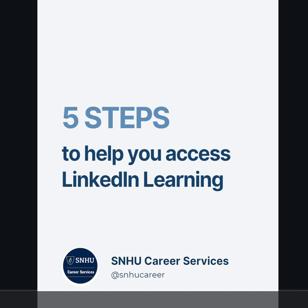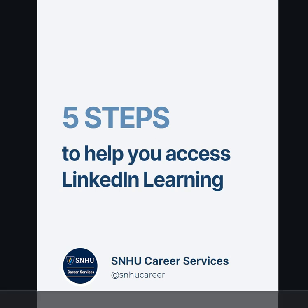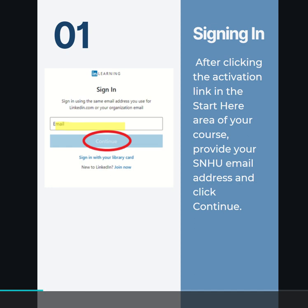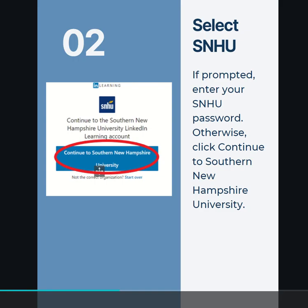Five steps to help you access LinkedIn Learning. Step one: signing in. After clicking the activation link in the Start Here area of your course, provide your SNHU email address and click Continue. Step two: select SNHU. If prompted, enter your SNHU password.